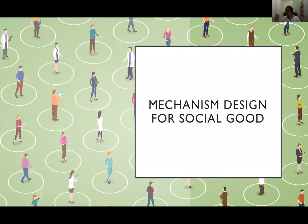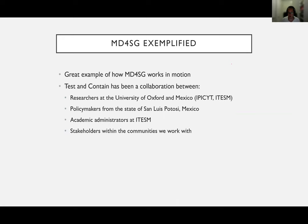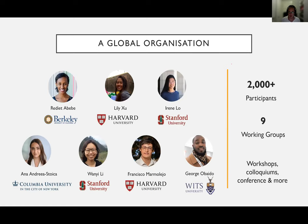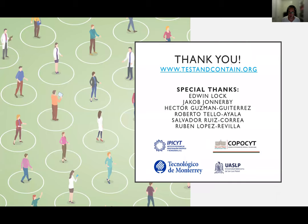To bring this all together, I want to end by talking about Mechanism Design for Social Good once more. This is a real good example of how MD4SG actually works in motion — a collaboration between researchers in Oxford and Mexico, policymakers from the state of San Luis Potosí, academic administrators in these universities, and the very communities that we work with. We've had multiple conversations with student bodies and communities in marginalized areas. MD4SG is a global organization with multiple participants. If this is something that interests you, I strongly encourage you to reach out. Thank you for taking the time to hear about this work.